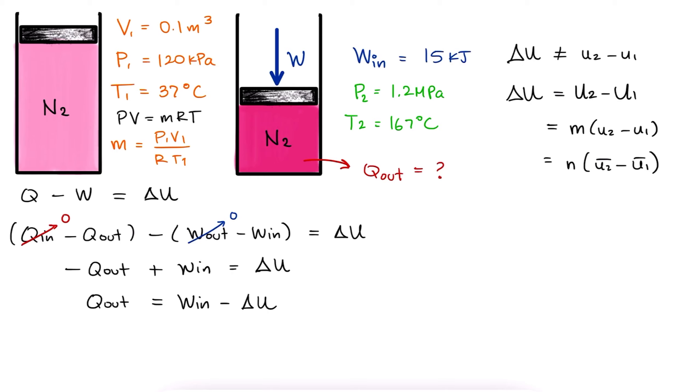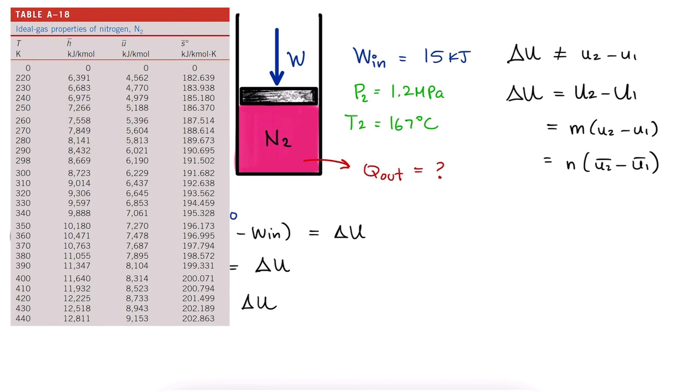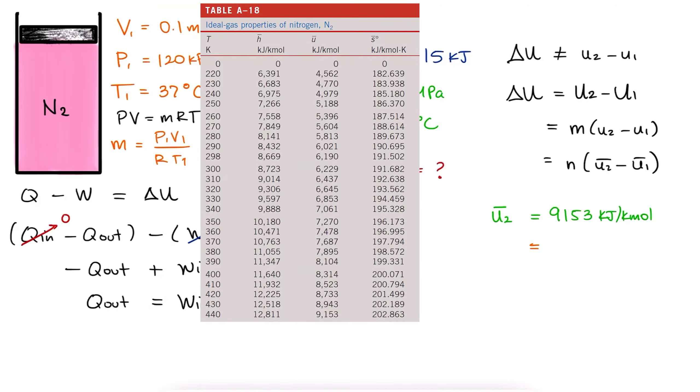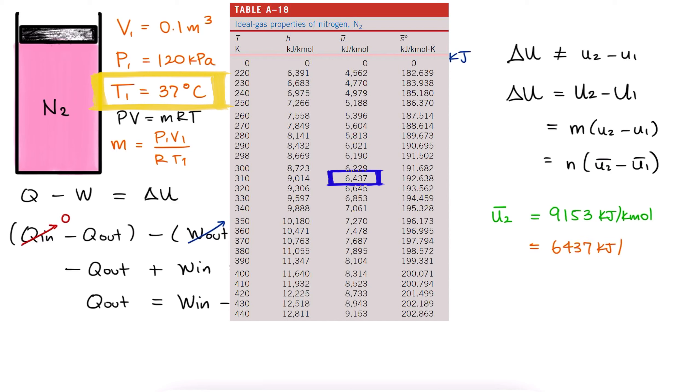Knowing that the most accurate way to find the change in internal energy is by going to the ideal gas properties of nitrogen table, we notice that what we can get from this is U-bar, the molar specific internal energy, not the mass specific internal energy lower case U. So we write down the U-bar value at 167 degrees celsius or 440 kelvin for U-bar 2 and the U-bar value at 37 degrees celsius or 310 kelvin for U-bar 1.